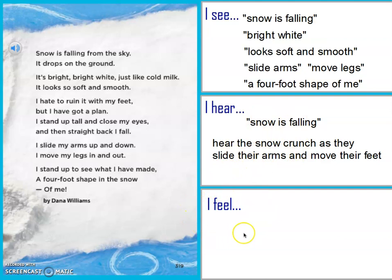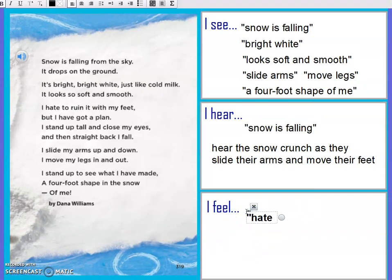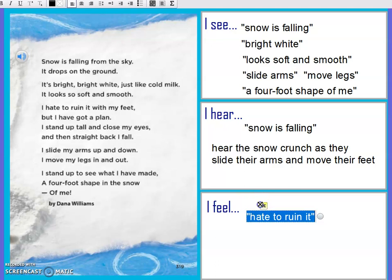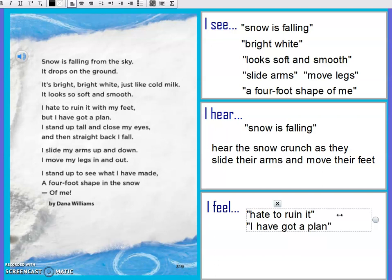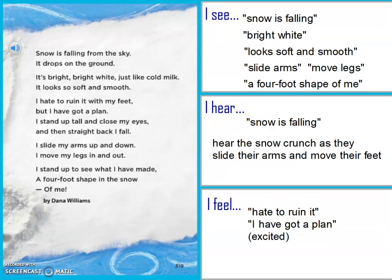What does it make you feel? She's excited — there's an exclamation mark. She hates to ruin it, so she almost feels a little bad, but she still wants to do it. She says 'I have got a plan.' So I would say she's excited about it. She knows what she wants to do and she's chosen to do it. So this sort of talks about how snow is exciting. Snow is part of nature, and nature lets you do exciting things or try new things. This poem sort of speaks to that.